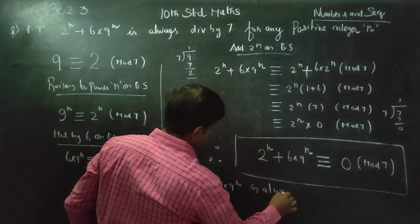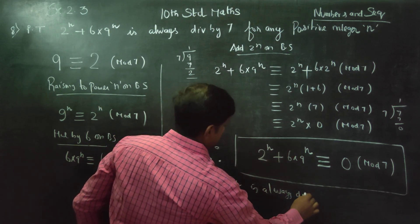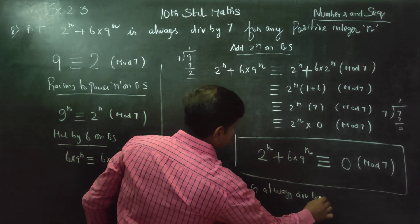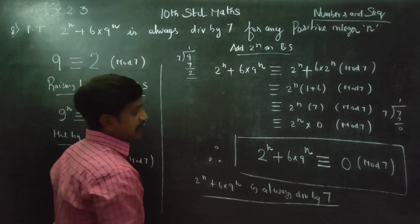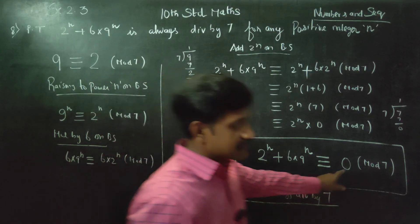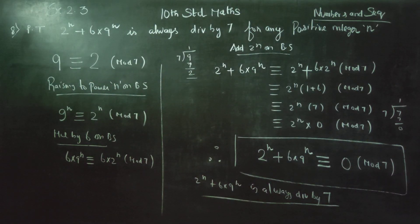Therefore, 2 power n plus 6 into 9 power n is always divisible by 7. The remainder is 0, which is always divisible by 7. Thank you.